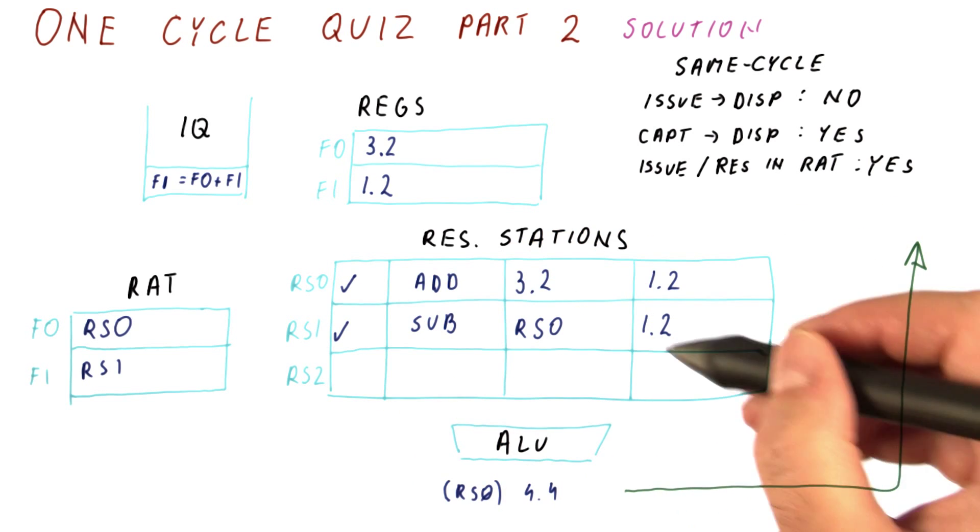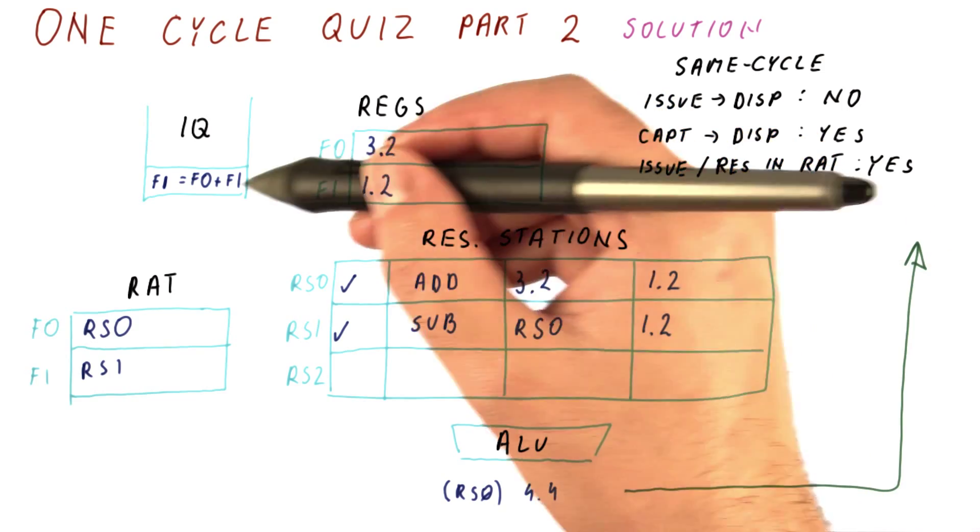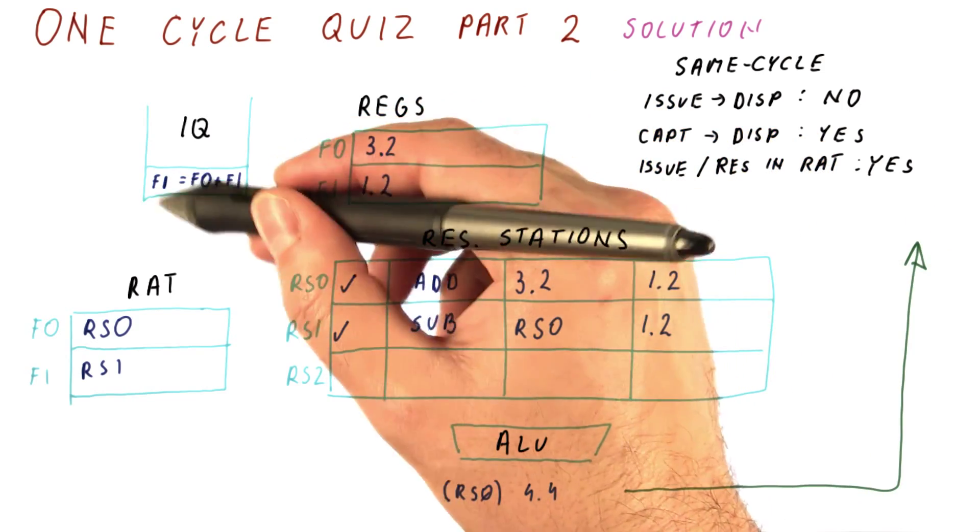But we have to be careful if multiple updates are needed to the same field. Let's first see what issuing is going to do.